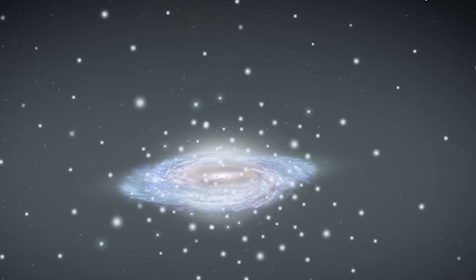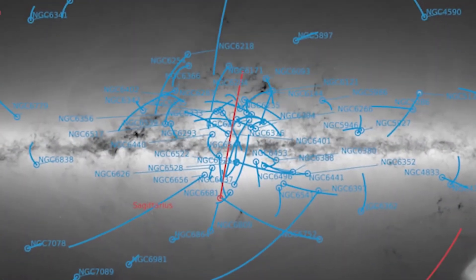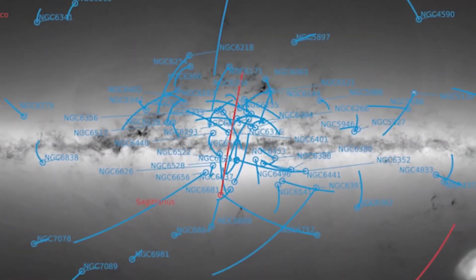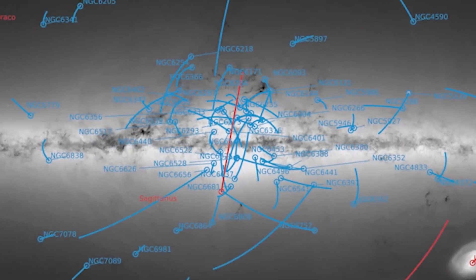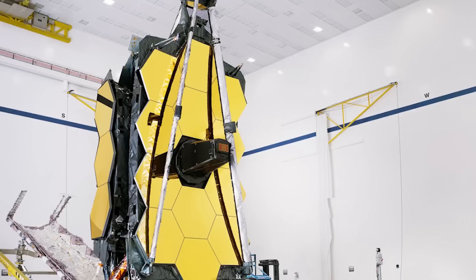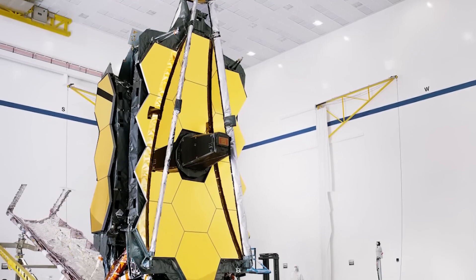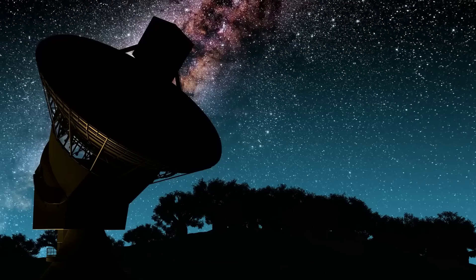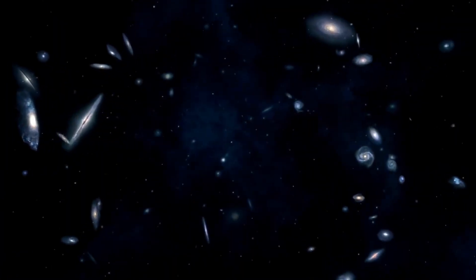These interactions can trigger or suppress star formation, change the shape and structure of the galaxies, and even destroy or merge them. Pearls DG, on the other hand, seems to have avoided these interactions and remained intact and isolated for billions of years.